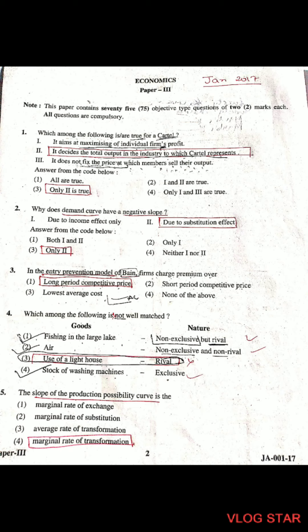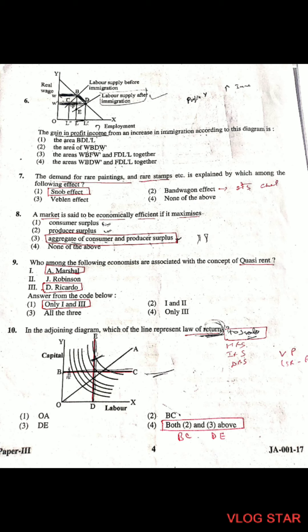Question 5: The slope of the production possibility curve is called the marginal rate of transformation, also known as MRT.